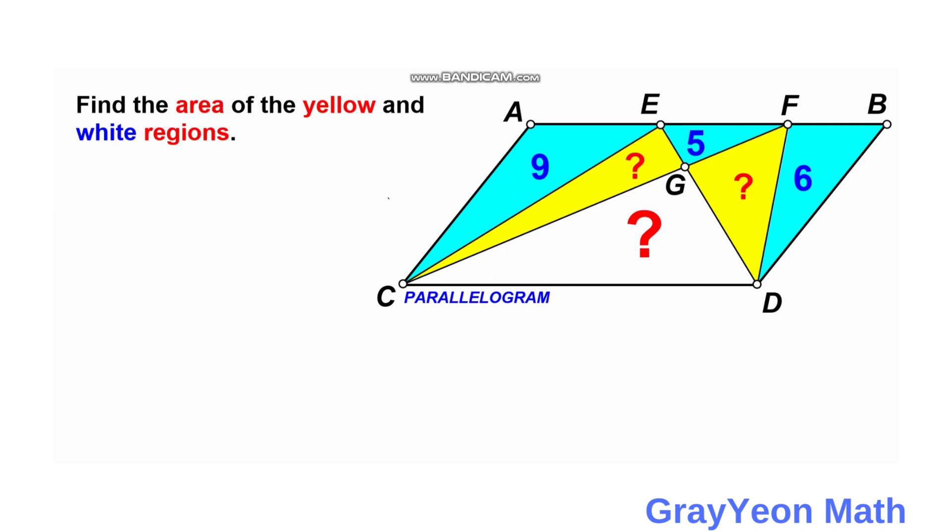First thing that we need to notice is that if we draw a line perpendicular from point E to the base, we can actually say that this is H, the height of the parallelogram and the height of triangle ECD. And if we label another height from F to the base, this is also H.